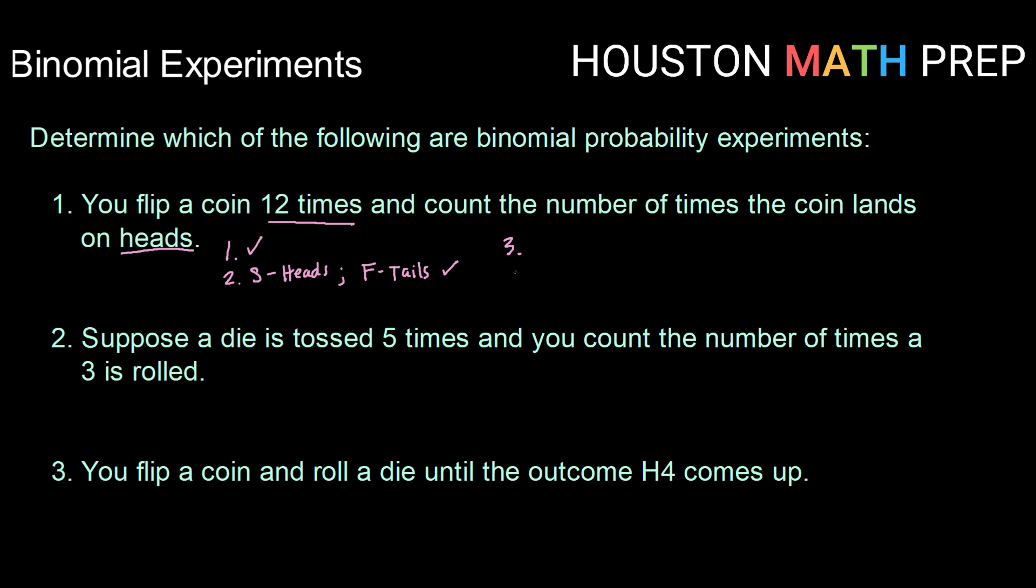The third criteria is that the probability of success needs to be constant for each trial. Here, the probability of landing on heads assuming that we have a fair coin is 0.5 or one half for each time that we flip the coin. So our probability of success remains constant.